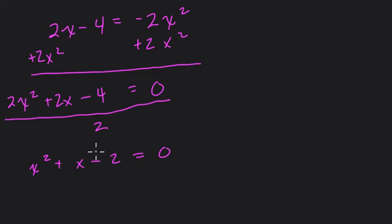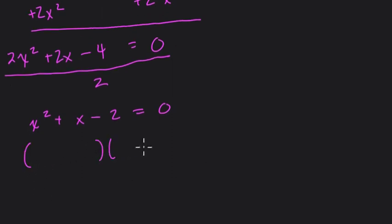So now, the question is, are there factors of negative 2 that add to positive 1? And there are. If we factor this out, we have x and x. And if we take positive 2 times negative 1, the product of negative 1 and positive 2 is negative 2, and they add to positive 1, so that works.